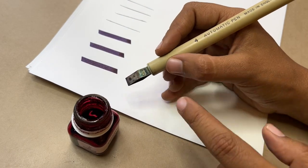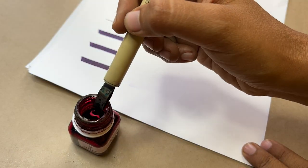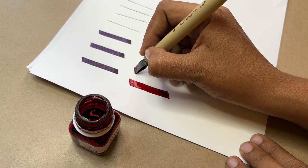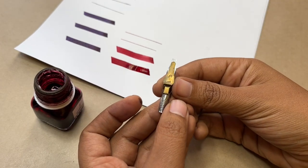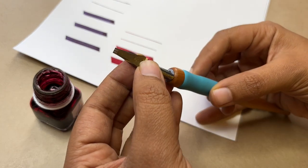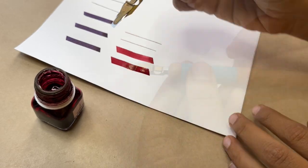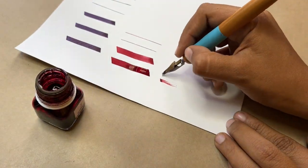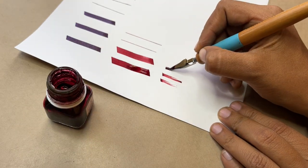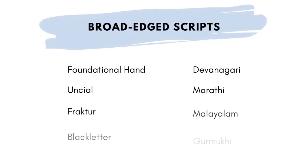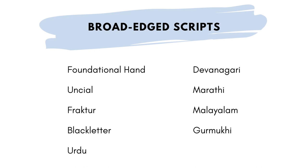These pens are very popular for broad-edged calligraphy scripts. People in ancient times used to cut a bamboo stick flat at the top, which was then called a reed pen. Apart from this, you'll commonly see other broad-edged tools like an automatic pen — these have stainless steel nibs that come in various sizes. Other common tools are flat nibs fitted in a holder and dipped in ink to write. Basically, any tool with a flat nib can be used to write broad-edged calligraphy scripts — both English and regional — like Foundational Hand, Uncial, Fraktur, Black Letter, Urdu, Devanagari, Marathi, Malayalam, Gurmukhi, and more.